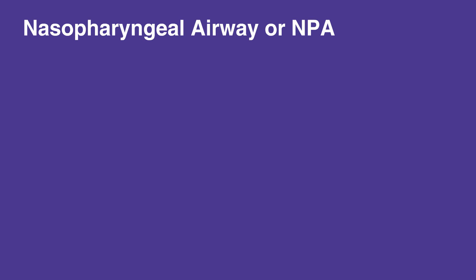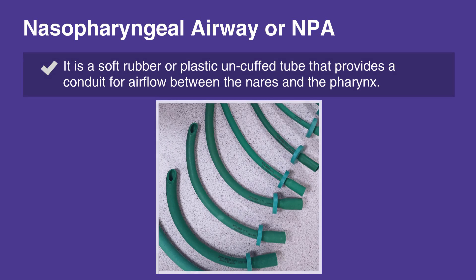The nasopharyngeal airway, or NPA, is a soft, rubber or plastic, uncuffed tube that provides a conduit for airflow between the nares and the pharynx.